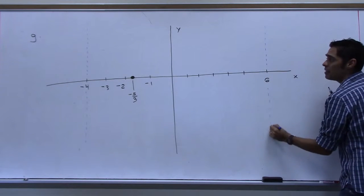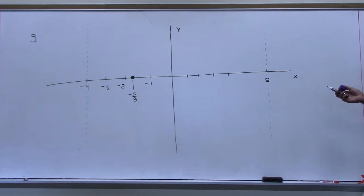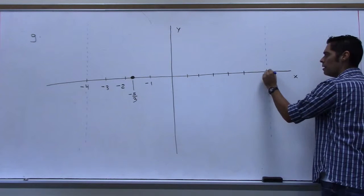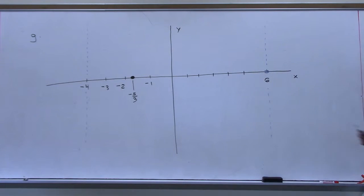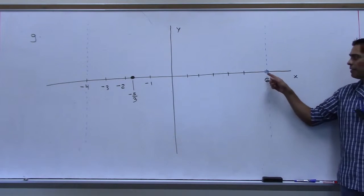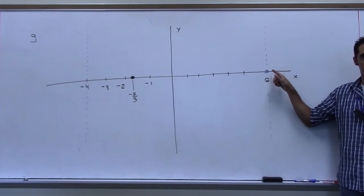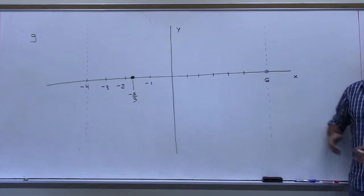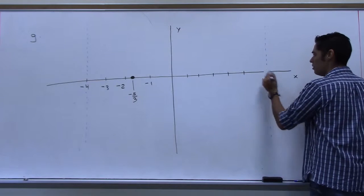One common mistake is drawing the vertical asymptote and then putting a dot on it. Don't ever put a dot where a vertical asymptote is, because later you'll think that's part of your graph and try to draw through it.